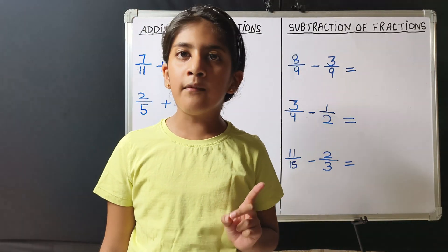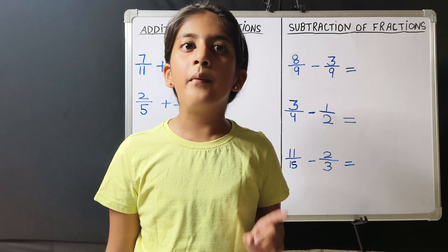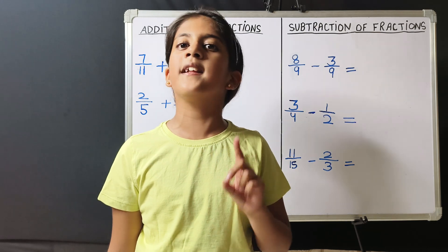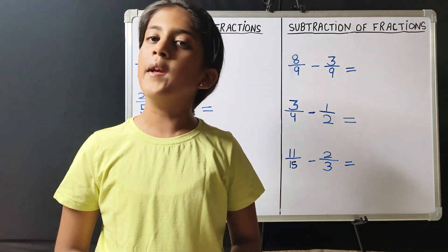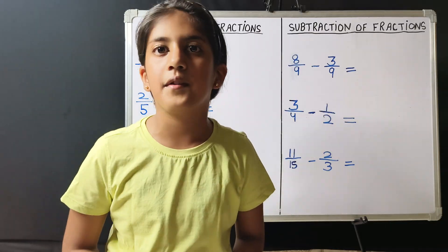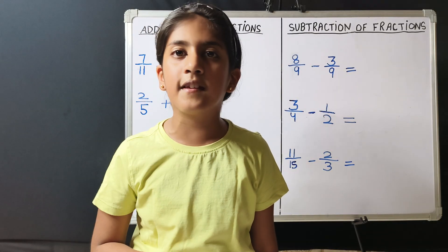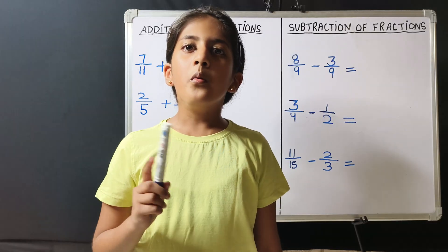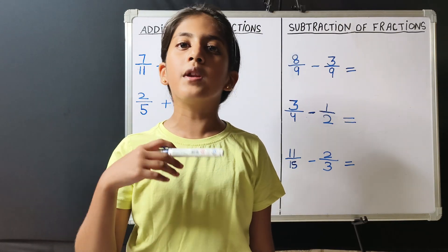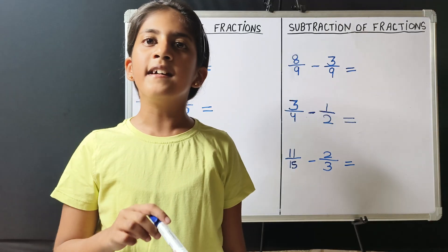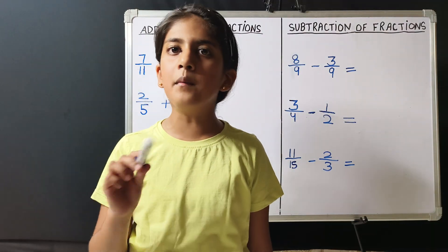Friends, whenever we have to add or subtract fractions, we always check the denominators. If the denominators are the same, we can add and subtract the numerators. But if the denominators are not the same, we will make the smaller denominator equal to the bigger denominator, and then add and subtract the numerators.